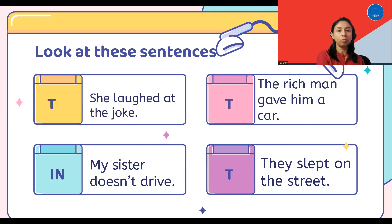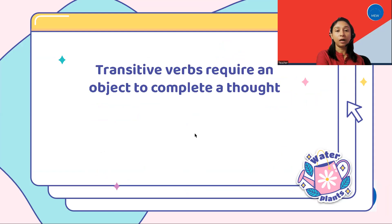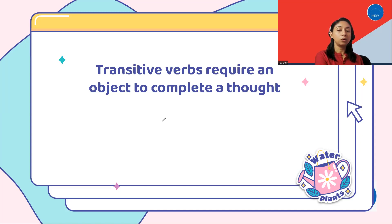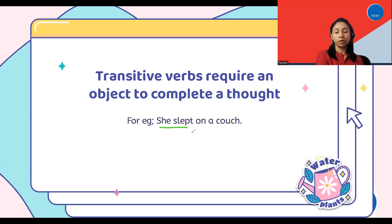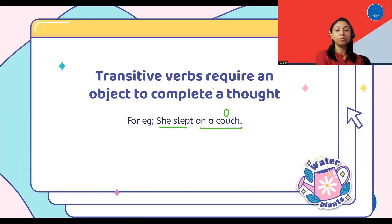Now let's move forward. Transitive verbs require an object to complete a thought. For example, 'She slept on a couch.' We can also say 'she slept,' however if we say only 'she slept,' the thought won't be complete. To make it complete, we have used an object, which is a couch. So a transitive verb would always have an object. This is the first way to identify a transitive verb in a sentence.